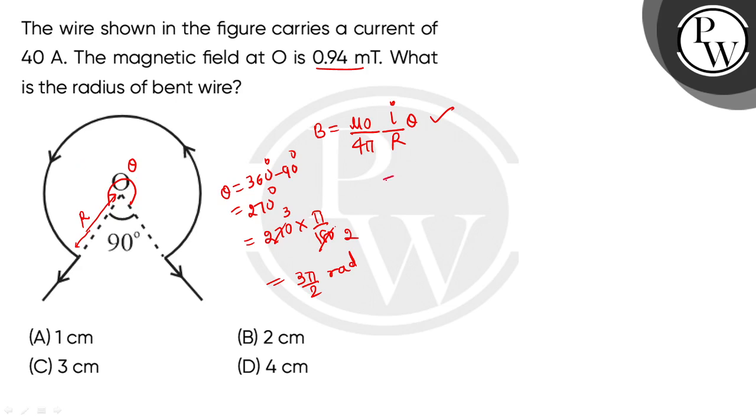Substituting into the formula: B equals mu naught over 4 pi times i over r times 3 pi over 2. Simplifying, we get B equals 3 mu naught i over 8r, as pi cancels.